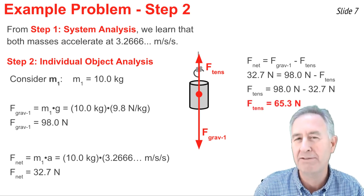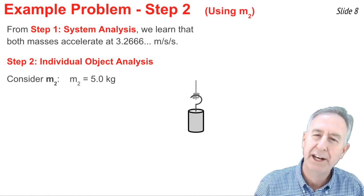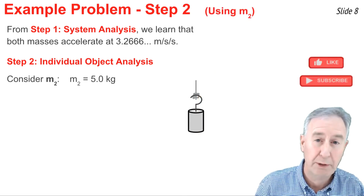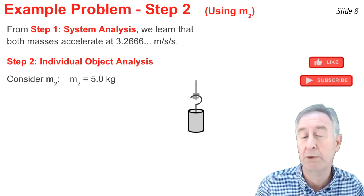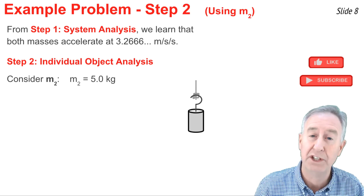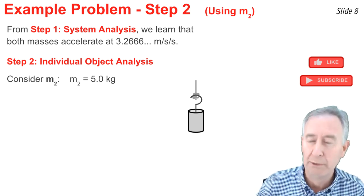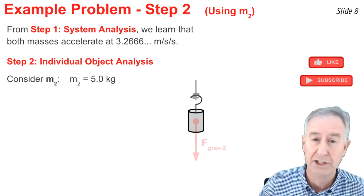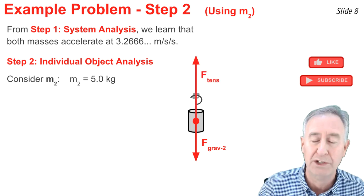I mentioned that it doesn't matter what mass you pick to do your individual object analysis. That we could have picked mass 2, and we should still get a tension value of 65.3 newtons. So let's prove it. Here's mass 2, and I want to do an individual object analysis. So I know there's a gravity force down, and then there's a string attached to this mass, and it's pulling upwards. This little mass accelerates upwards, so I know that the tension force arrow is larger than the gravity force arrow.